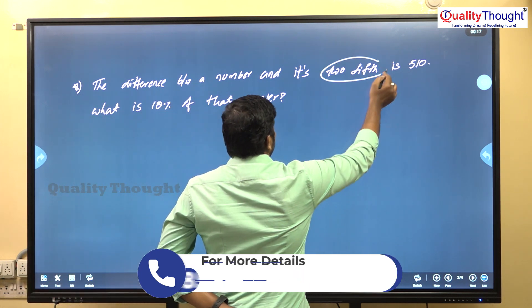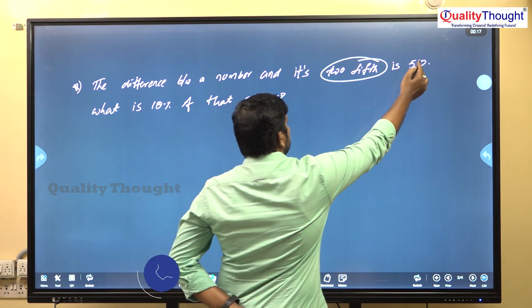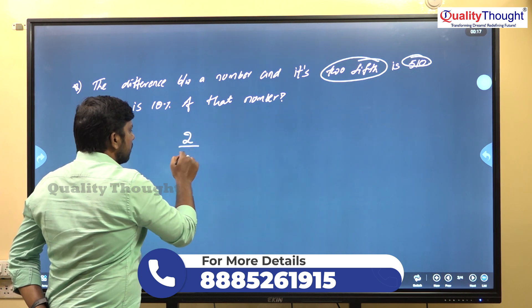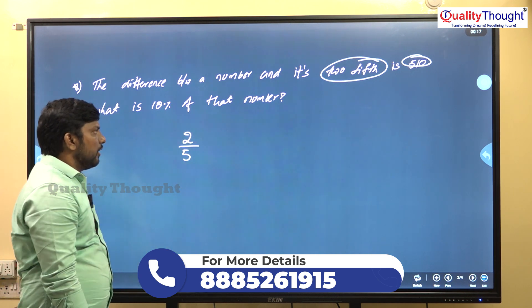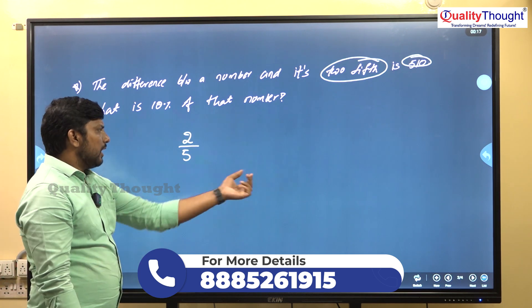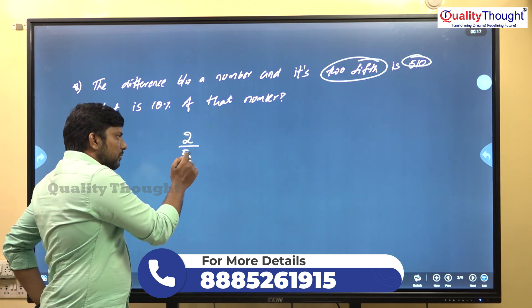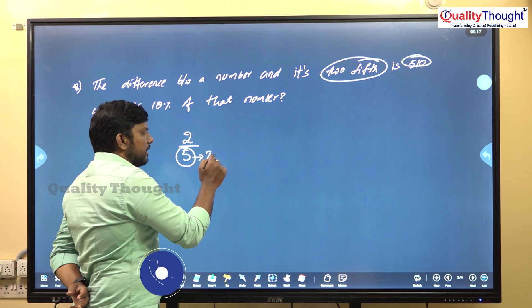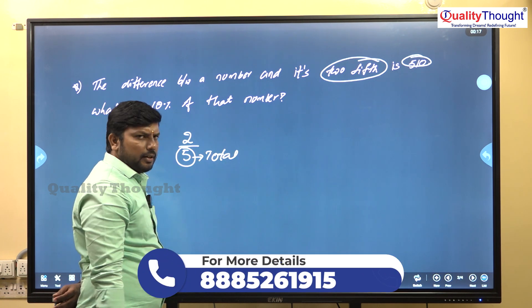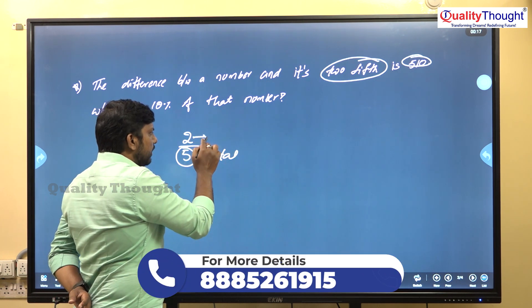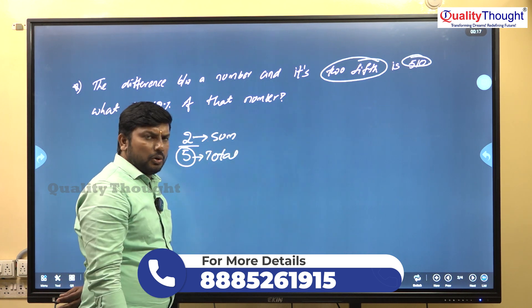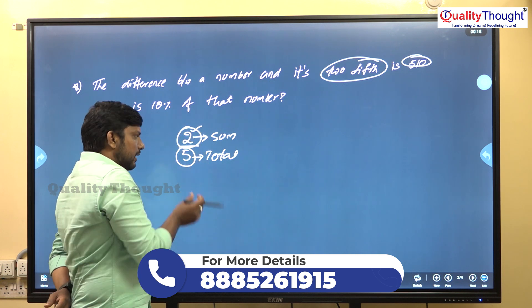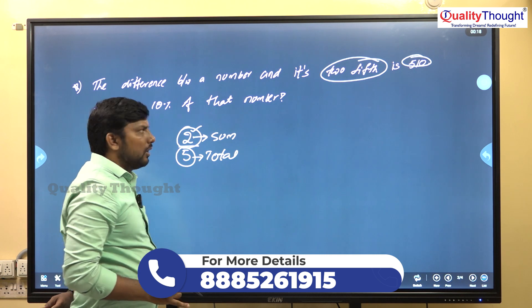Next question. 2/5th means 2 by 5. This indicates the total parts of the number. Total parts of the number is 5, and some parts of the number is 2. So in 5 parts, 2 parts are given.